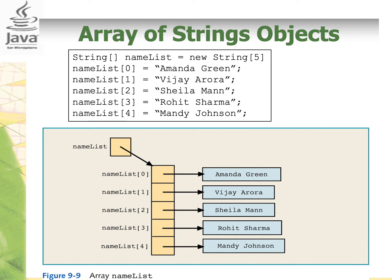Let's look back at this slide. Here we have an array of string objects called names. As we have learned in a previous topic, we know that string is an object, unlike int, double, char, and other types that are primitive data types. This means when we create an array of strings, we are creating an array of objects.